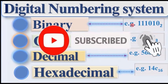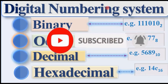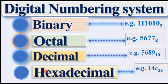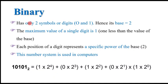Hey guys, today I'm going to show you a digital numbering system. In this digital numbering system there are four basic parts: binary, octal, decimal, and hexadecimal. A simple example is the representation of data. For the basic concept of binary, octal, decimal, and hexadecimal, let's see them together. Binary has only two symbols: zeros and ones.